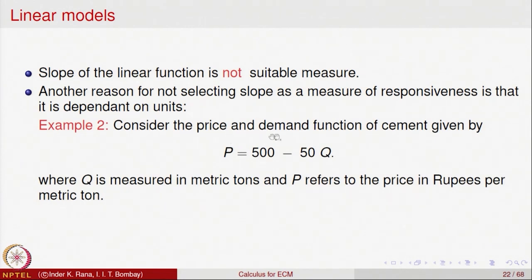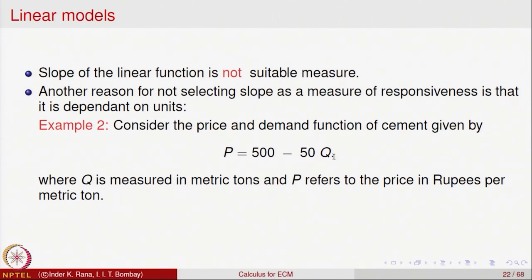Another reason why slope is not a useful measure of responsiveness is that the demand and supply equation depends upon the units used. Consider a price and demand function for cement given by P equal to 500 minus 50Q, where Q is measured in metric tons and P is the price in rupees per metric ton.